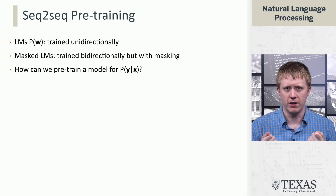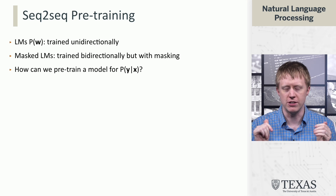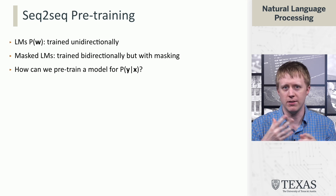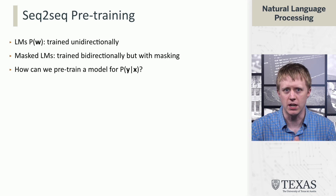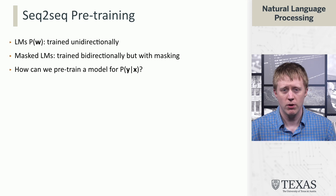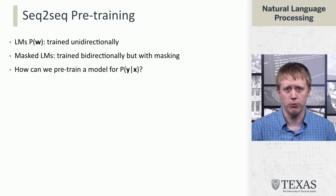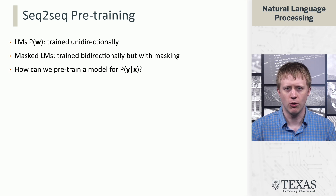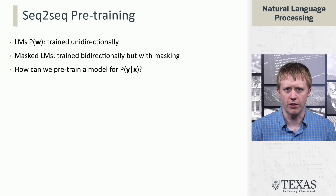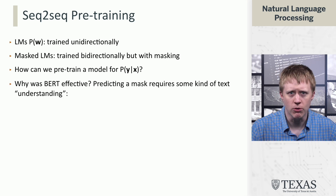Then we talked about masked language models, which have a kind of bi-directional nature to them and use masking to avoid the cheating problem. So if we think about tasks which have the form P of Y given X — things like machine translation — how can we pre-train a model that's going to be good at these? It doesn't feel quite like these other problems somehow.